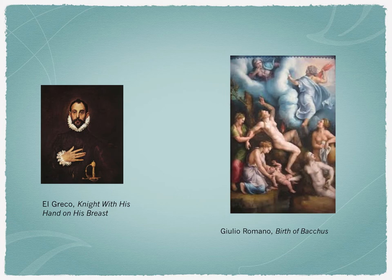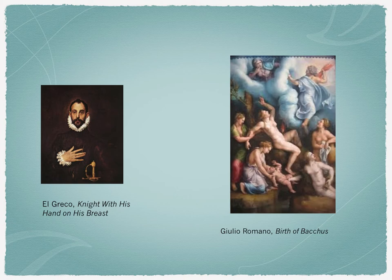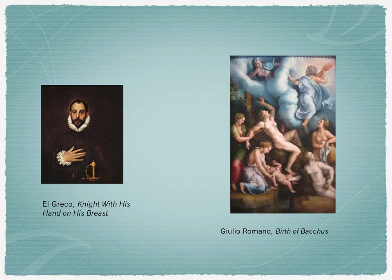El Greco's work features an intense pose, almost bordering on a ghastly look. Over on the right is Giulio Romano's 'Birth of Bacchus,' on display at the Getty. Notice that every character is involved in something: in the upper right-hand corner is the Roman god Jupiter heading back up into the heavens, where his wife Juno has been spying on him. He has a child on Earth — the Roman god of winemaking, Bacchus.